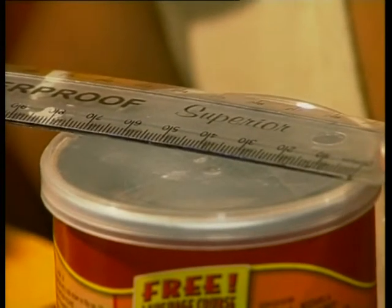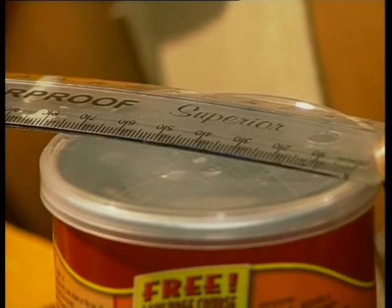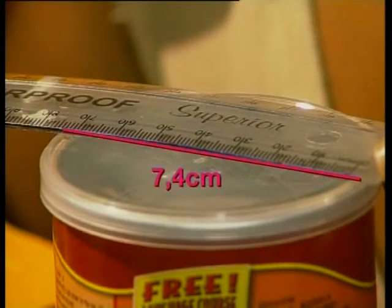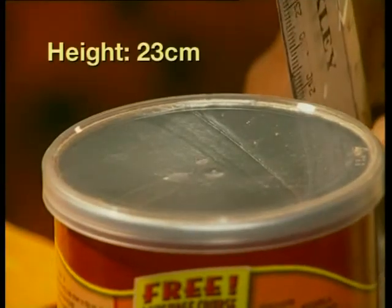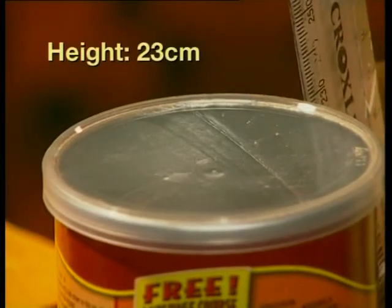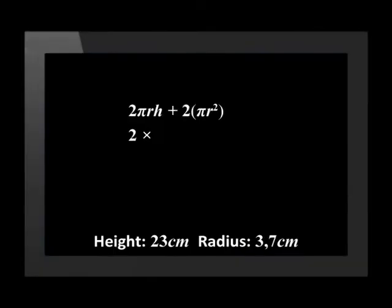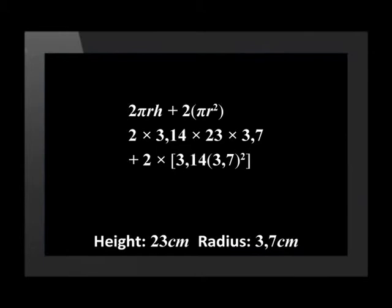The diameter of this tin cylinder is 7.4 centimeters. That means the radius must be half of that, 3.7 centimeters. The height is 23 centimeters. Putting that into the equation, I get 2 times 3.14 times 23 times 3.7 plus 2 times 3.14 times 3.7 squared.